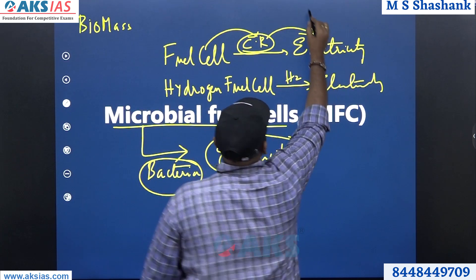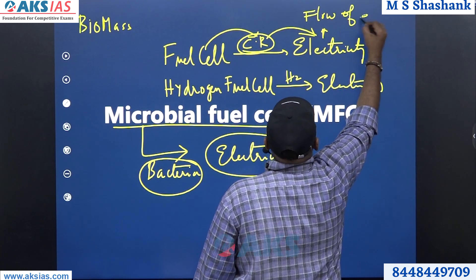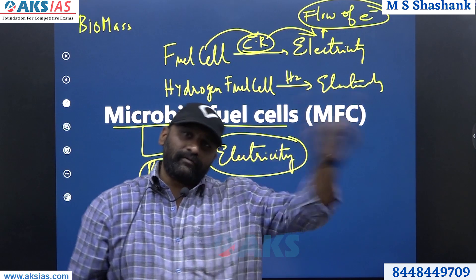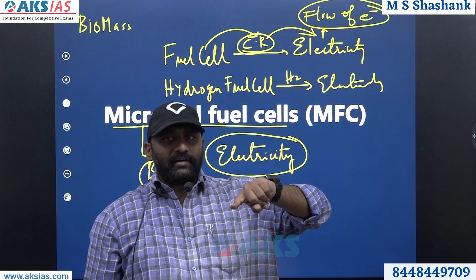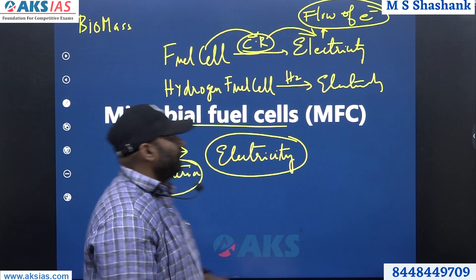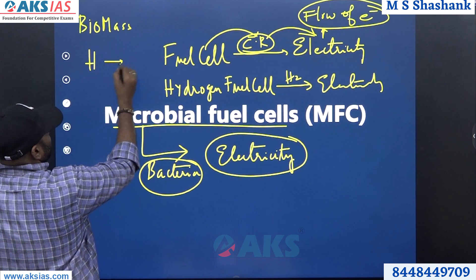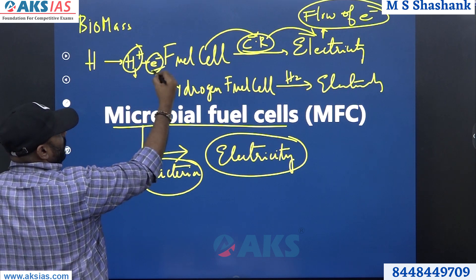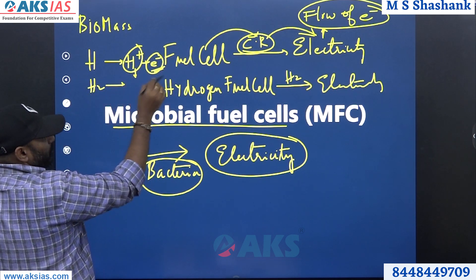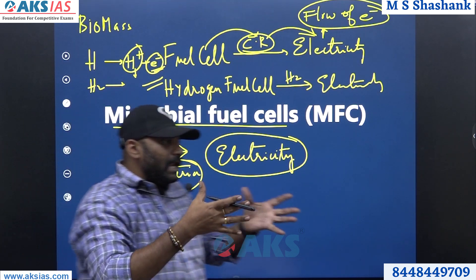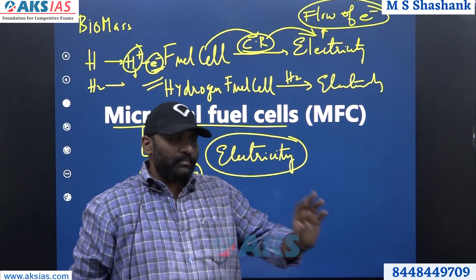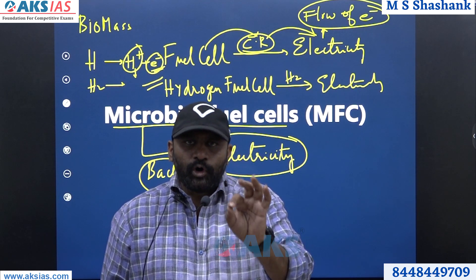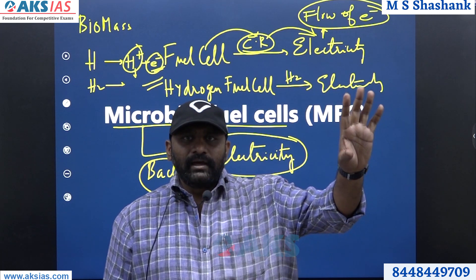What is electricity fundamentally? It is flow of electrons. For any electricity generation process you require the production of electrons first. For example, if H2 is there and H2 breaks, it produces H+ plus electron — one positive, one negative. So electrons will be released. If more H2 gas is decomposed, a lot of electrons will be released and it gets converted into current or electricity.